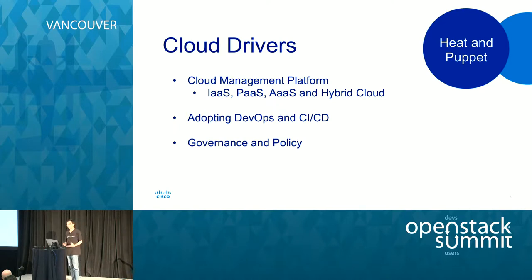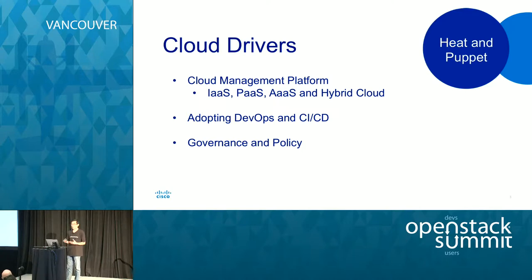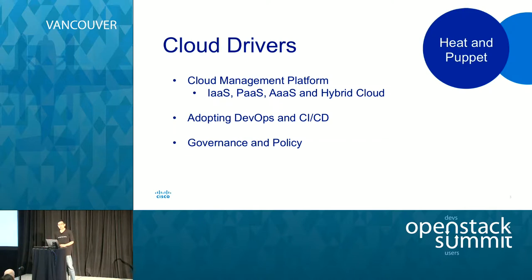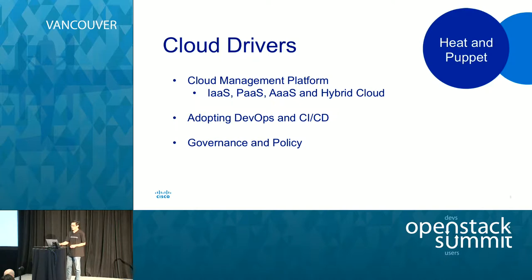When we look at those two driving forces, we see that silos are being broken — the storage team needs to talk to the network team, or the application team. That's DevOps: developers need to do operations, and operations folks start doing development. The converging point is the cloud, where all the silos are broken and all the infrastructure comes together. But very importantly, that's why there's a need for governance and policy when managing the cloud in an enterprise.